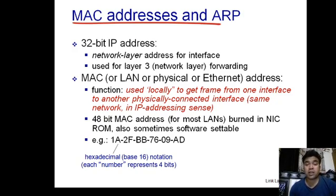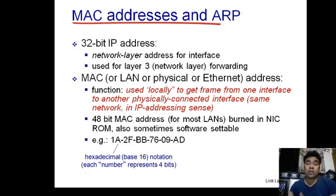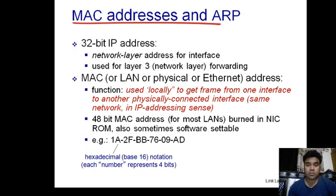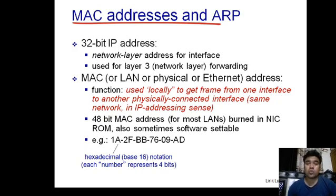MAC address works at the data link layer and is responsible for transferring a particular frame from the current node's network interface card to the next node's network interface card. MAC address is 48 bits long, hard-coded on the network interface card. IP address, in IPv4, is 32 bits long, and IP addresses are given to source and destination only, remaining the same throughout the packet's journey from source to destination.